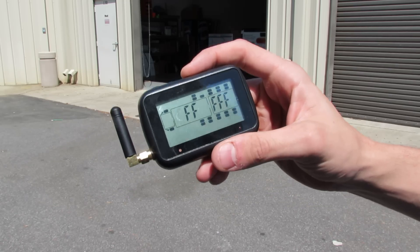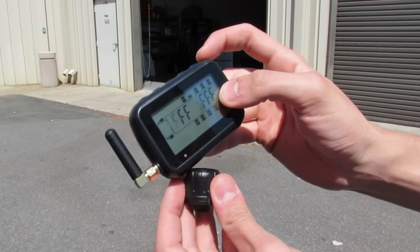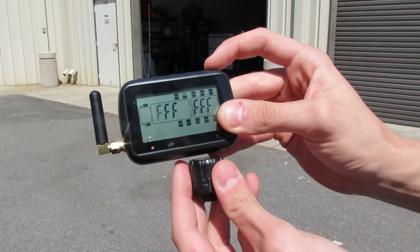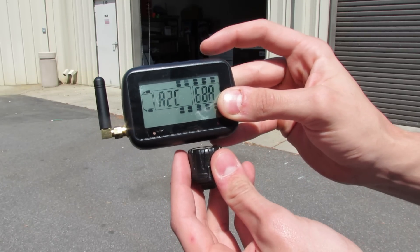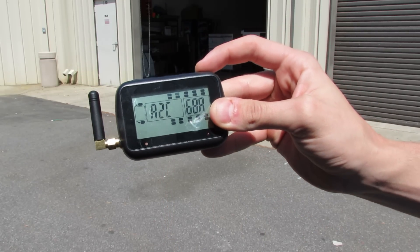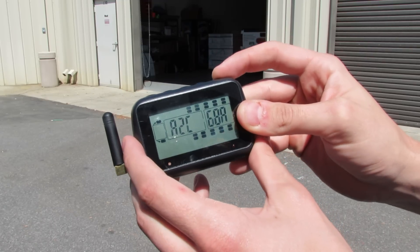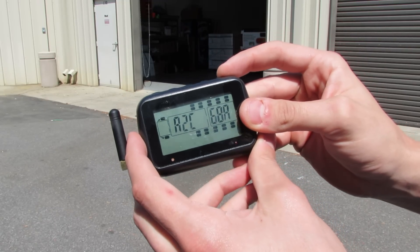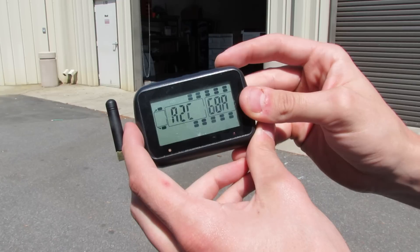Take your sensor, and using the code button at the bottom of the monitor, press the code button. It will instantly pick up and your code will be inside the monitor. Do this for all the sensors you have.